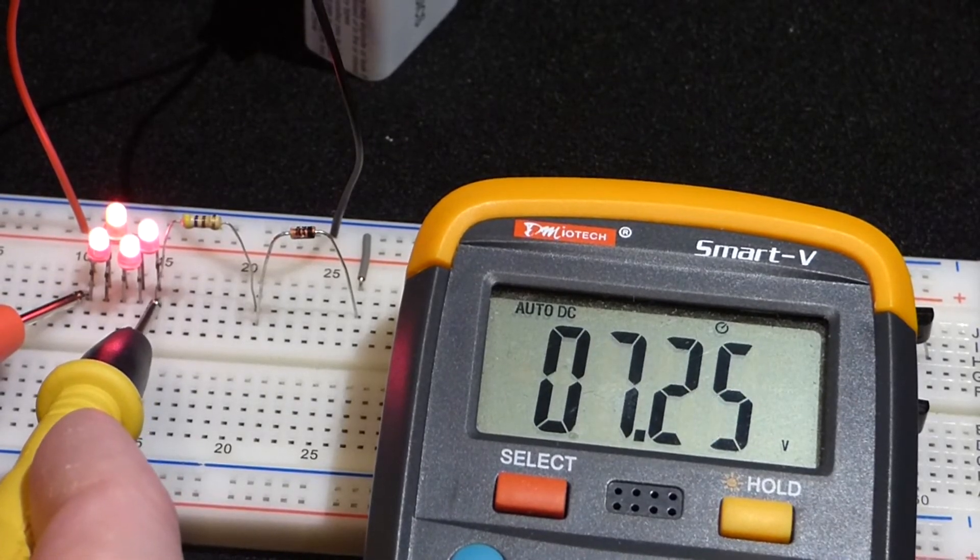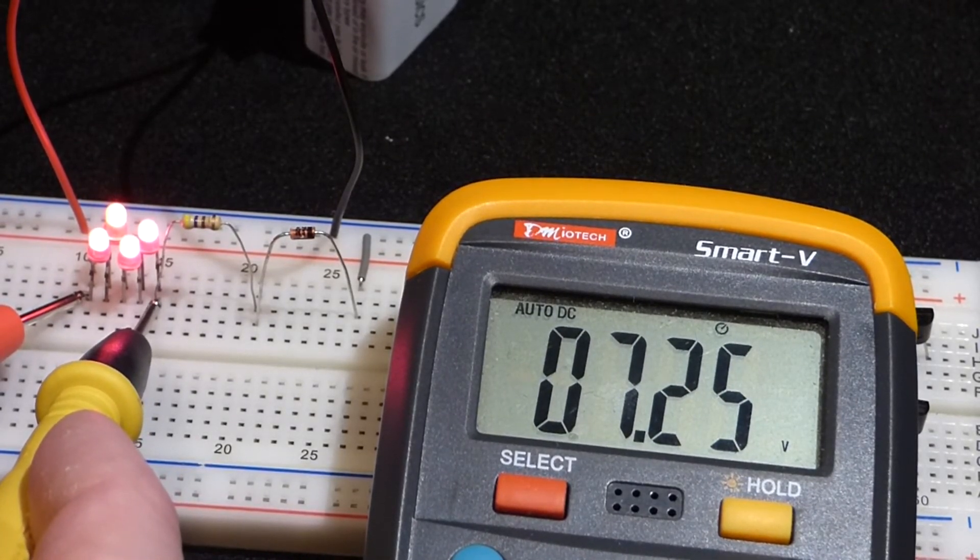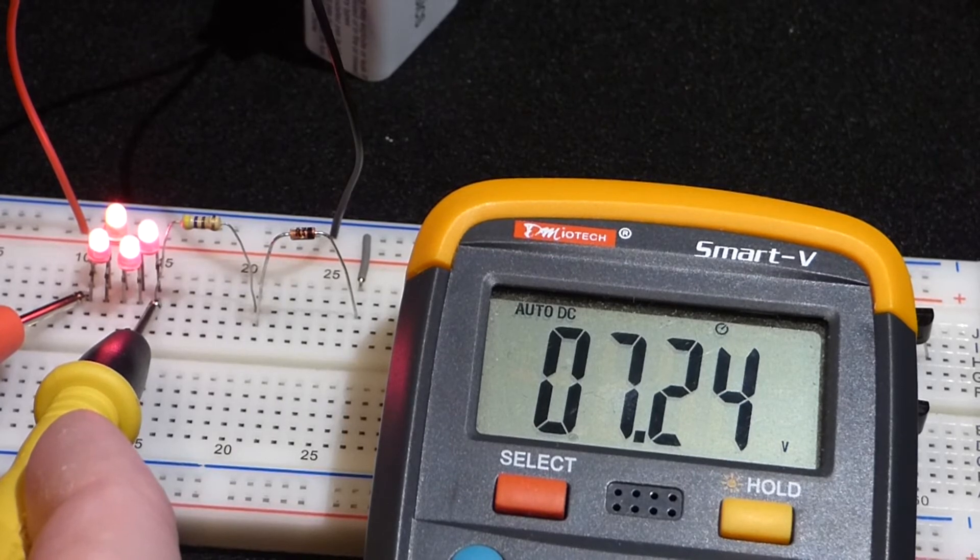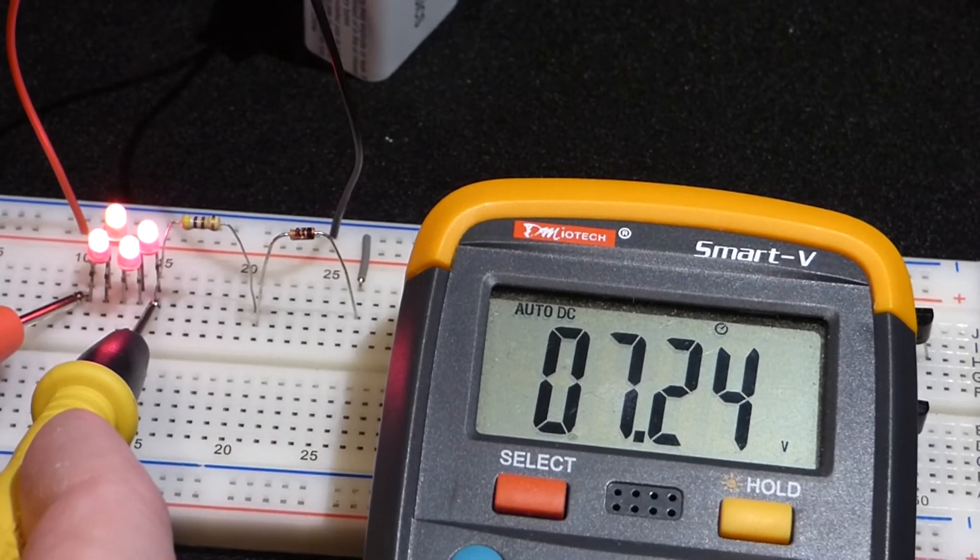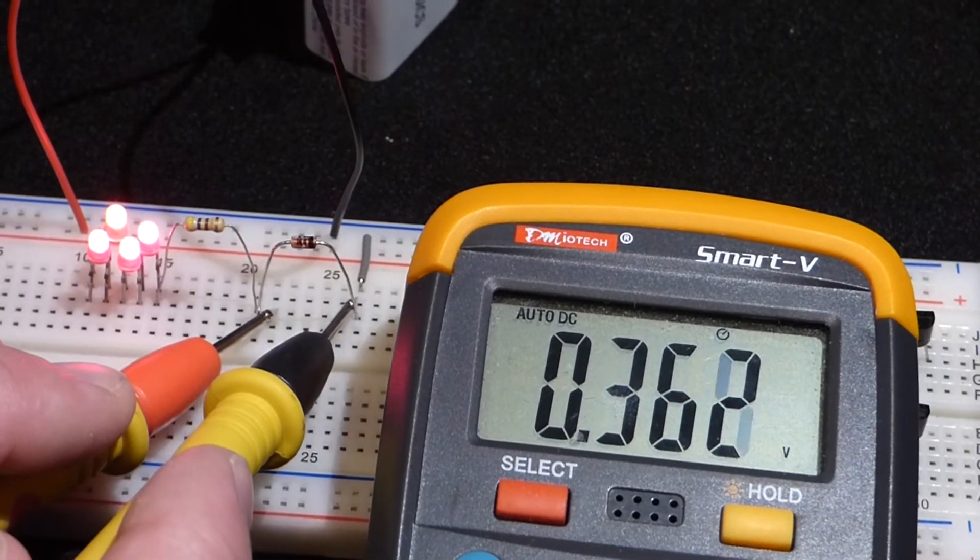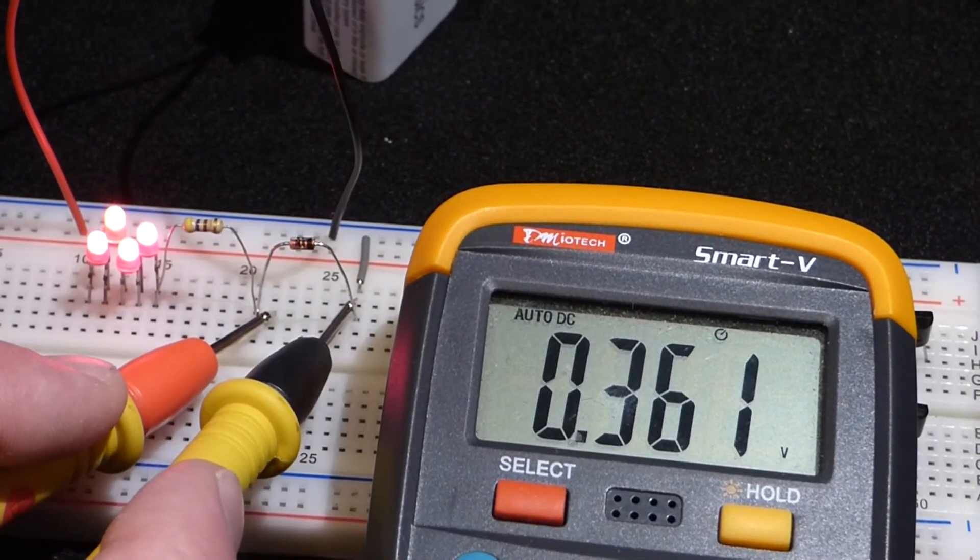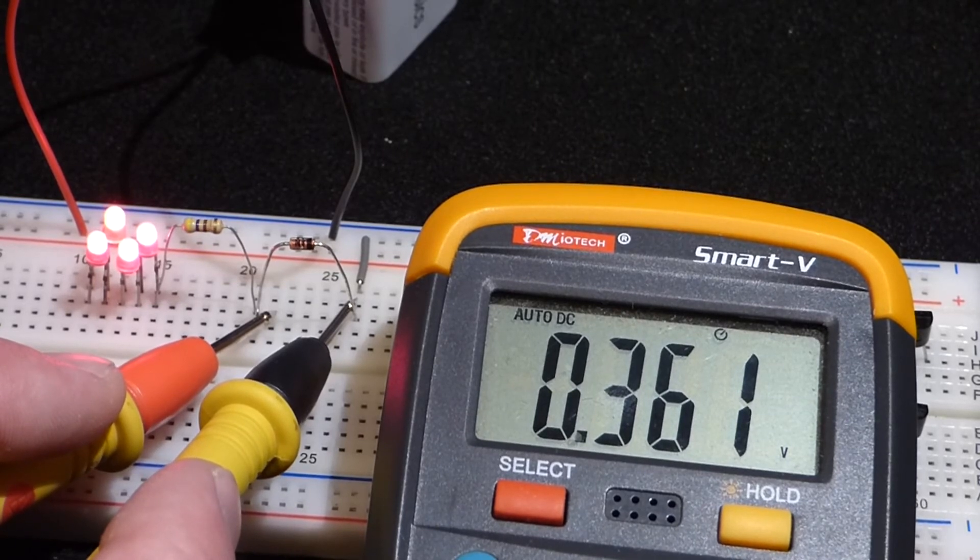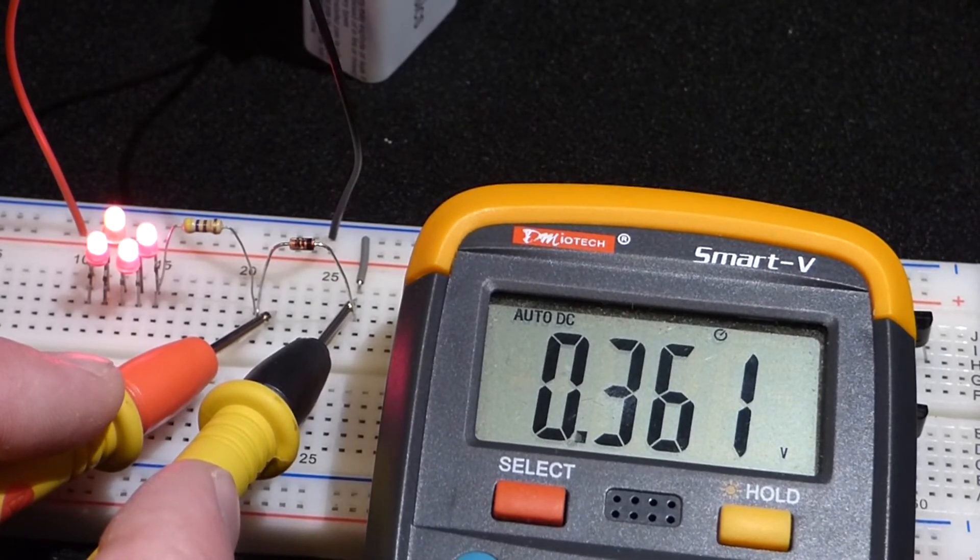We'll look at the voltage drop now of these four LEDs in series. And you can see it drops about 7.3 volts from the circuit. And now, when we measure the voltage drop of the Schottky diode, now you can see it's a bit lower, 0.361 volts.